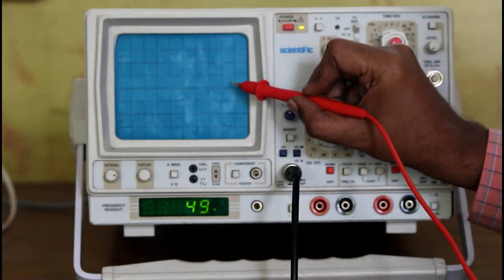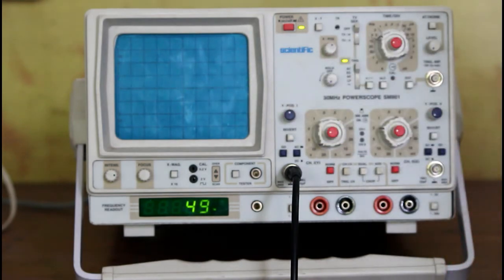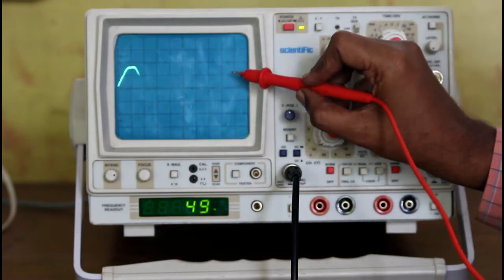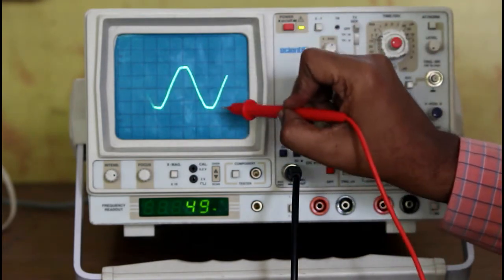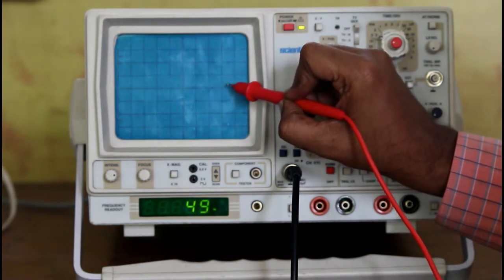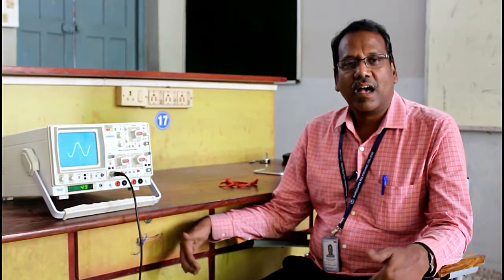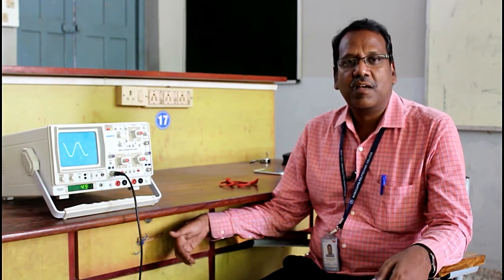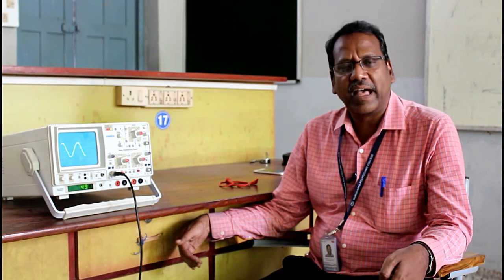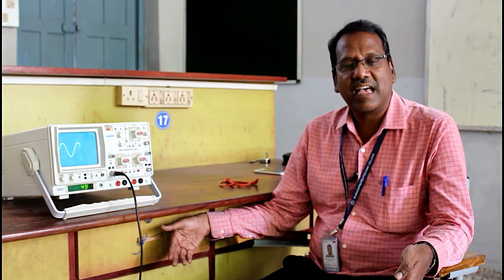If you want to calculate the frequency, frequency is equal to 1 divided by time period. So 1 divided by 20 millisecond gives you 50 hertz. This is how we measure the time period and voltage of a sinusoidal signal. I hope you have understood the usage of the CRO — how to trace a signal, measure the voltage, time period, and thereby calculate the frequency. Now you can use the CRO confidently. Thanks for watching.